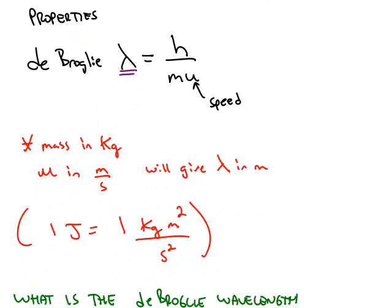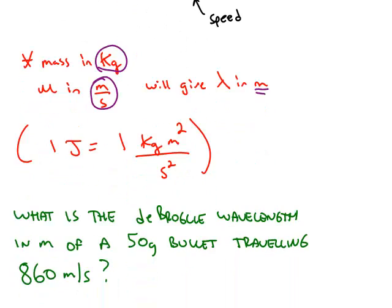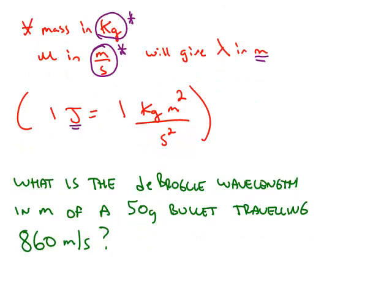The mass must be measured in kilograms and the speed has to be measured in meters per second. This will give you the wavelength in meters. It's a little bit complicated because Planck's constant has units of joules in there, and a joule is a kilogram meter squared per second squared. This is why you have to use these units in order to get your answer in meters.